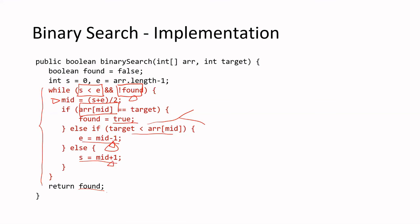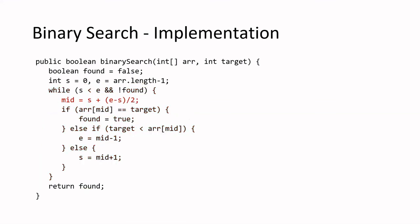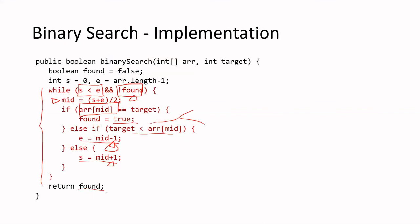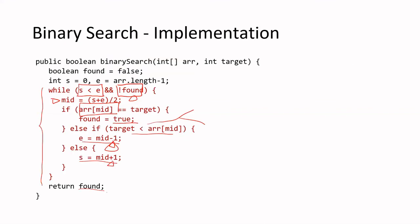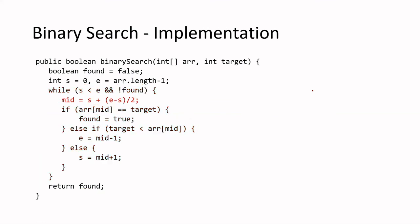Let's look at some applications of binary search. By the way, there are two ways of calculating the middle point: s + e / 2, or equivalently s + (e − s) / 2. There's no big difference between the two.